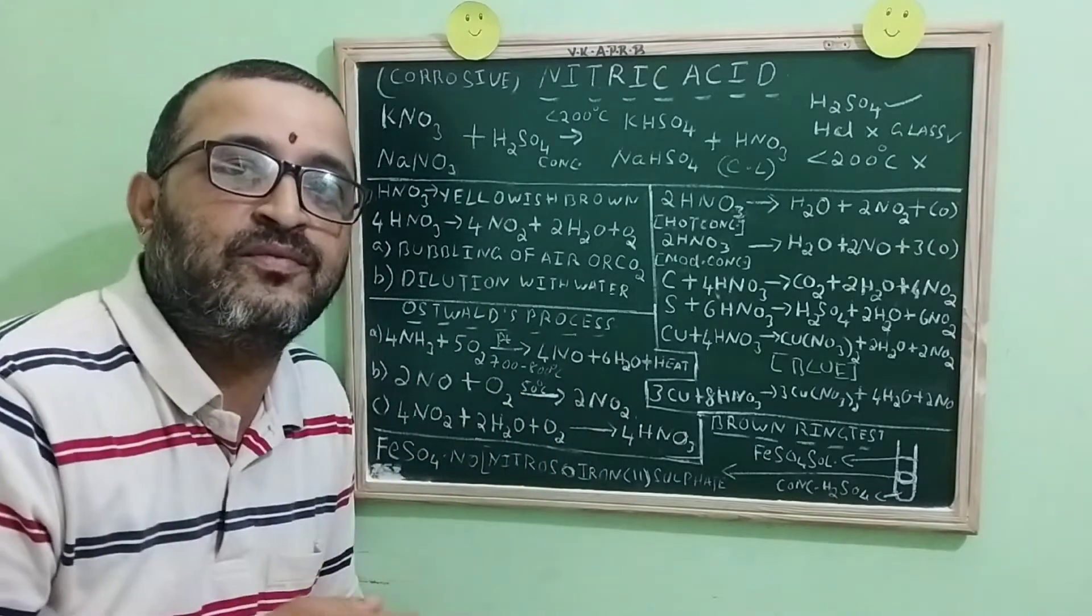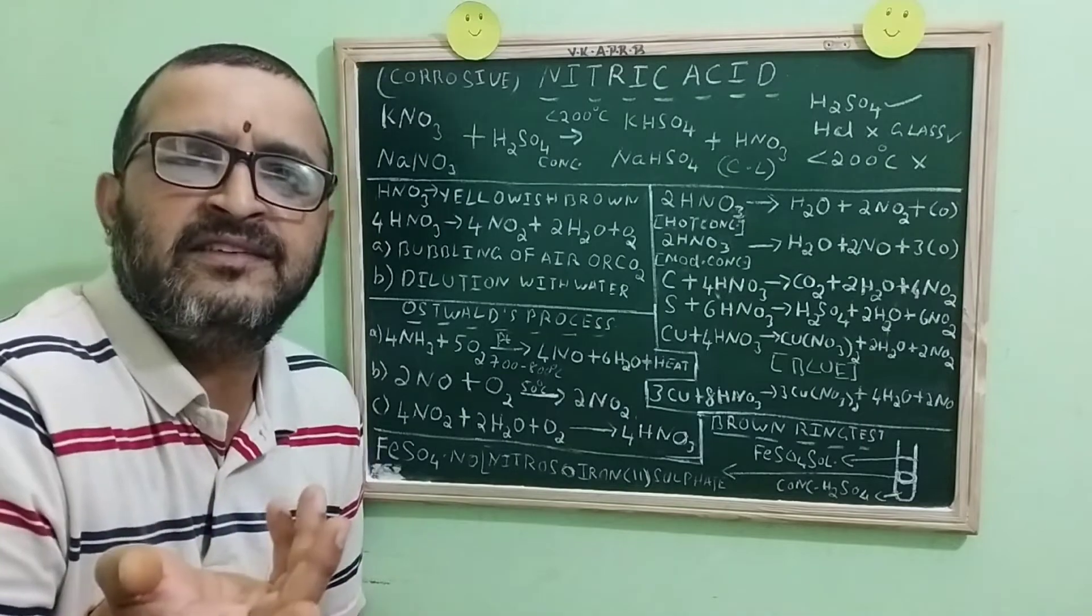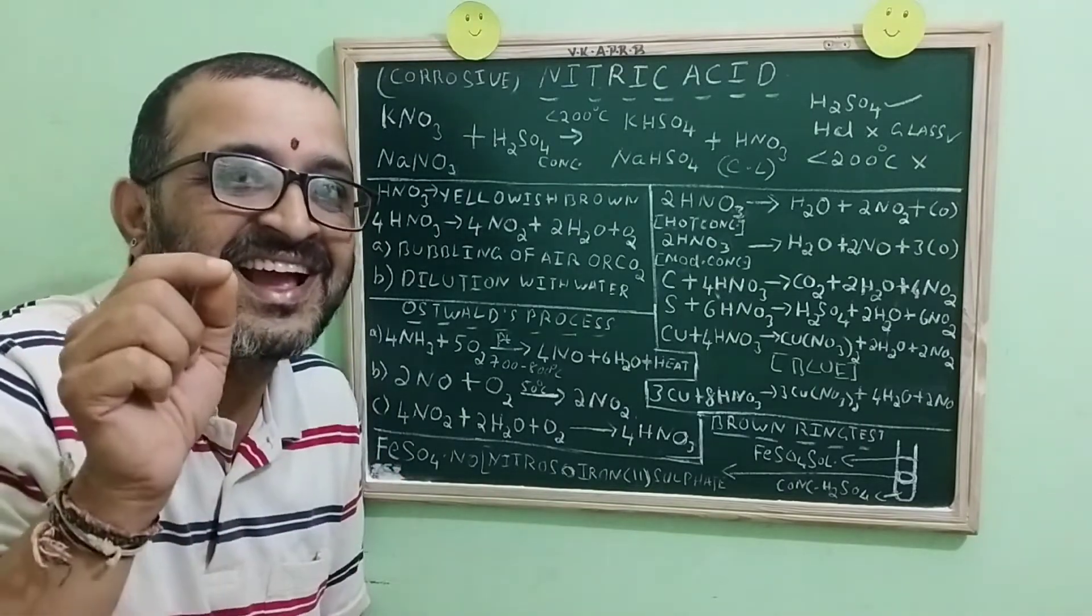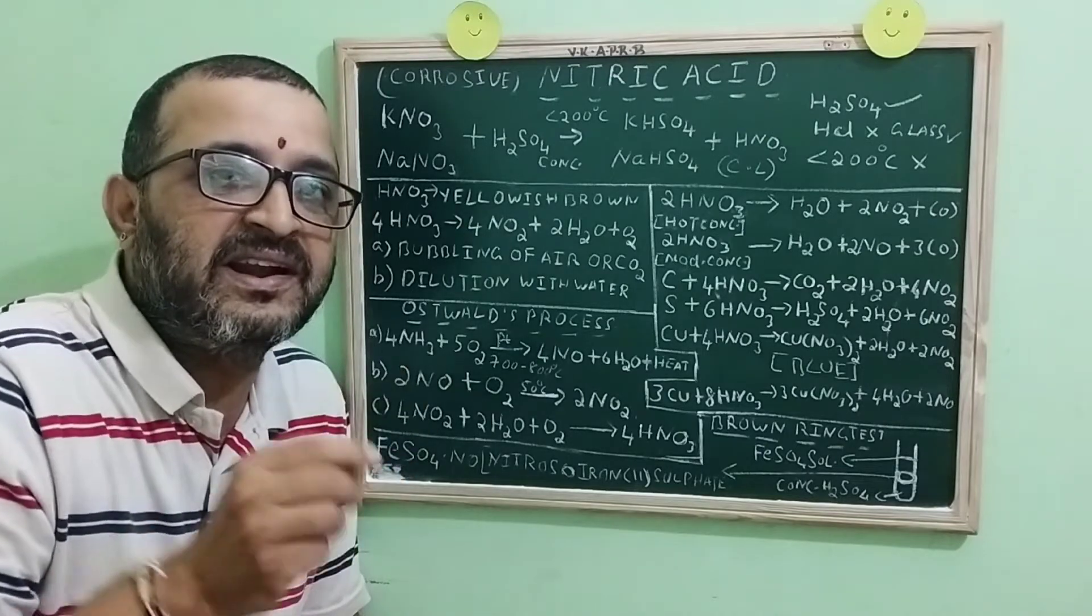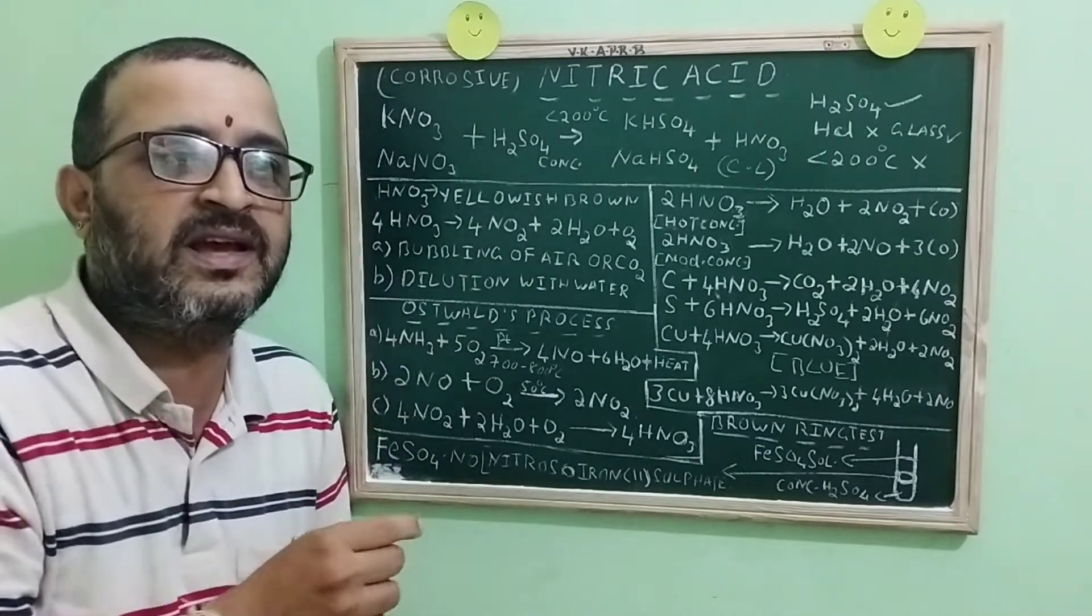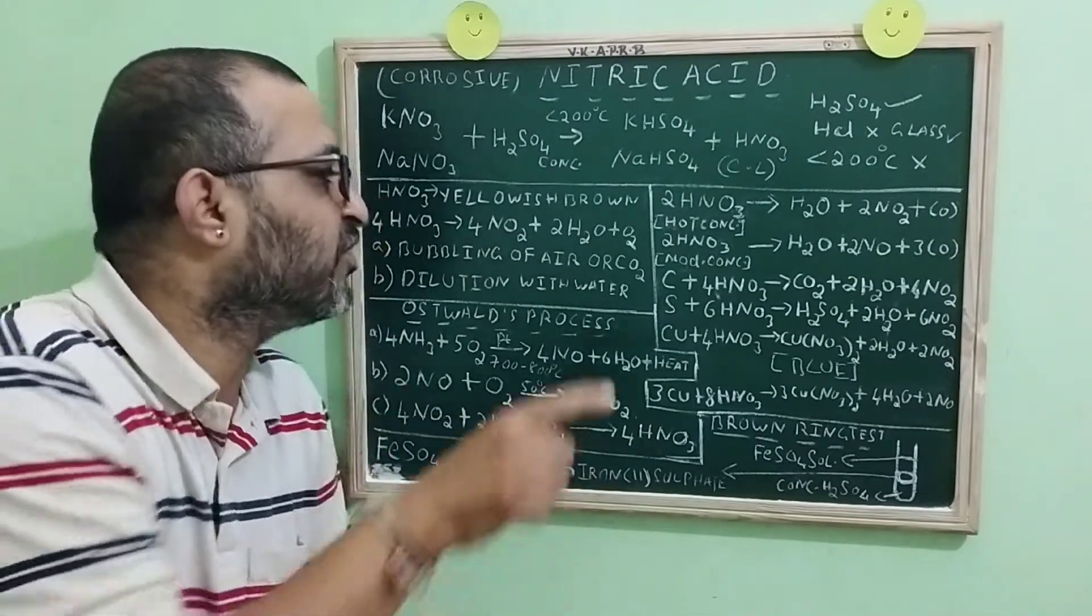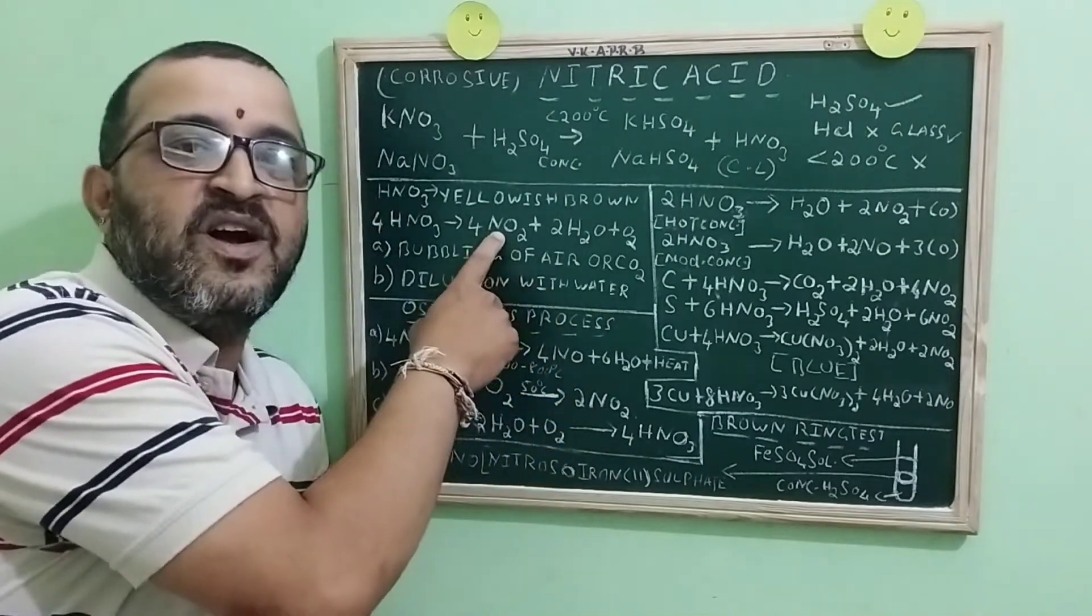What is the color of nitric acid? Like all acids, nitric acid is also colorless. But the nitric acid available in the laboratory is slightly yellowish brown in color. The question arises, why is that color? That is due to the dissolved nitrogen dioxide.